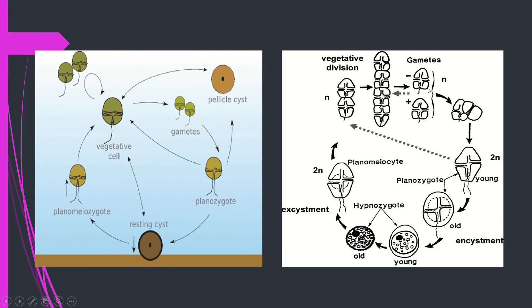This diagram shows exactly what was described. Two strains — one positive and one negative — unite to give rise to a zygote. This undergoes encystment; the cyst rests at the bottom of the sea and waits for the arrival of optimum conditions. When optimum conditions come, they start their germination process, carried out by simple division method.